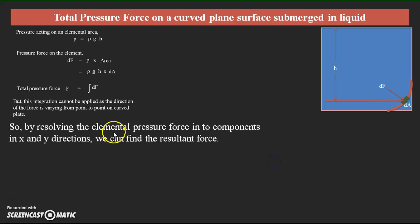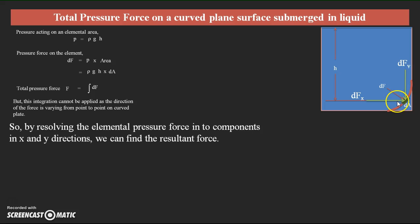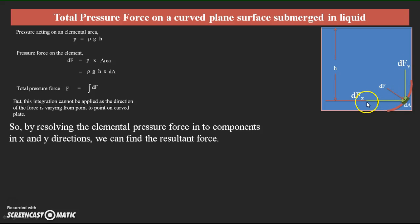To find the total pressure force, we resolve the elemental forces into two components in the x and y directions. By finding dfx and dfy — acting in the horizontal and vertical directions — and applying integration to each, we get the total force in the x direction and total force in the y direction. The complete resultant force can then be determined as F = √(Fx² + Fy²).